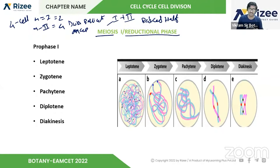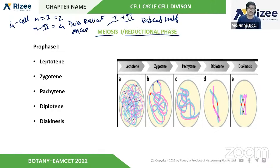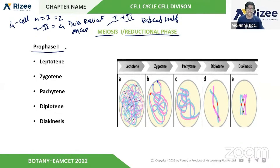Interphase is common in both mitosis and meiosis. Meiosis is also further divided into prophase, metaphase, anaphase, and telophase. First, in Meiosis 1 — the reductional division — we will discuss prophase 1.